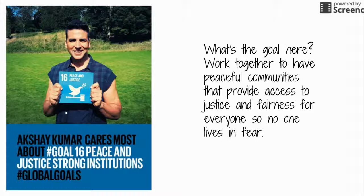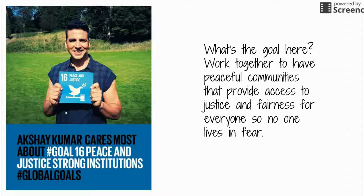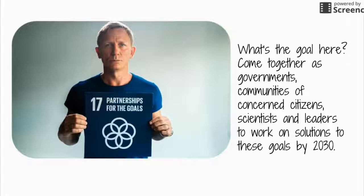If any of these goals matter to you, be thinking about what you would like to invent or create or what kind of solution you could come up with and work with other people on. Number sixteen is about peace and justice — working together to have communities that treat people fairly and where nobody's afraid. The last goal is partnerships — ways that people work together. Governments and citizens need to come together if we're going to work on these goals by 2030.